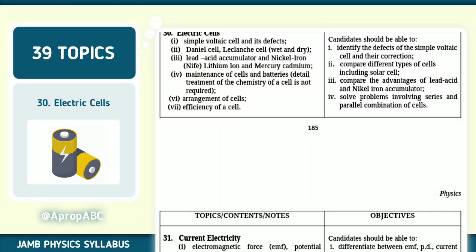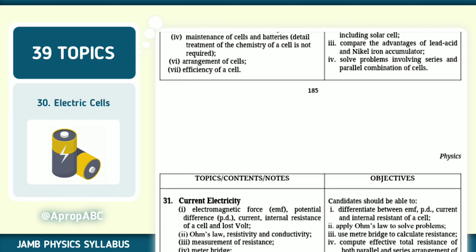Number 30, we have electric cells. Simple voltaic cell and its defects. We have dry cells, lead acid accumulator and nickel ion mercury cadmium. Materials of cells and batteries. EMF of cell, efficiencies of cell. Note that very well. Be able to solve questions on series and parallel arrangements.